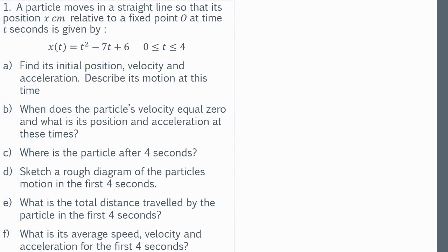Let's get into an example with parts a through f. A particle moves in a straight line so that its position x centimeters relative to a fixed point O at time t seconds is given by x = t² − 7t + 6, where t is between 0 and 4 seconds. Part a asks us to find its initial position, velocity and acceleration, and describe its motion at this time.